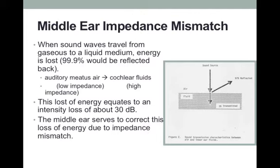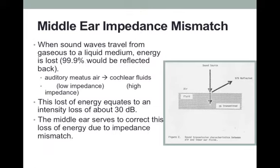Going back to the function of the middle ear, the main function is to compensate for the loss of energy when sound travels from the air medium in the external ear into the fluid medium of the inner ear. When energy travels from a less dense medium like air to a denser medium like liquid, a majority of the energy is reflected back — in our case as high as 99.9%, which when converted to decibels accounts to about a 30 dB loss. The middle ear's main function is to match this impedance so that energy is not lost.